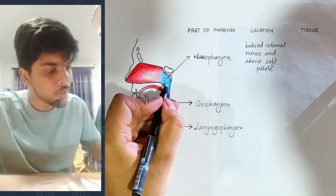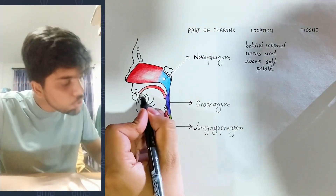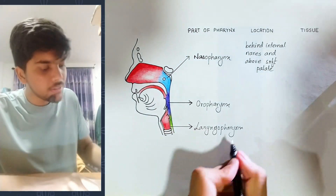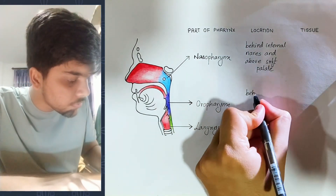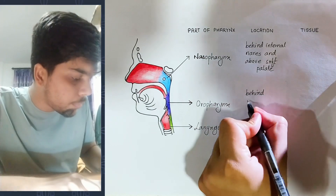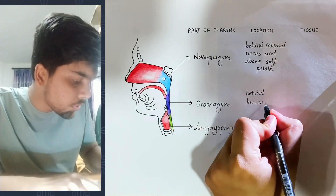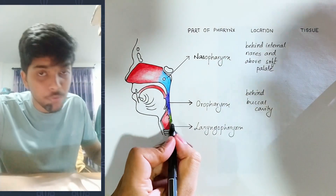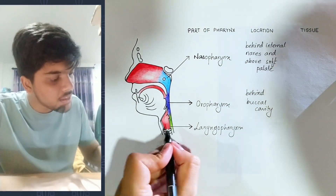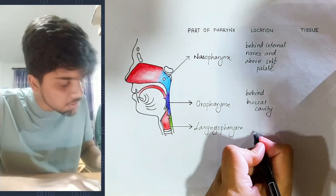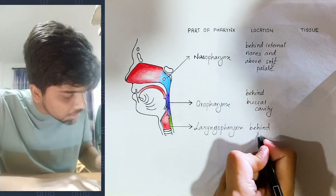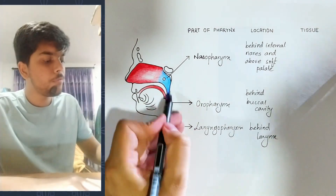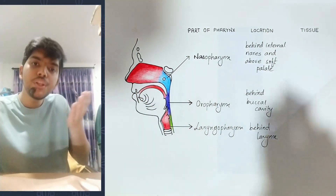Next is the oropharynx. This is the buccal cavity. Behind the buccal cavity is the oropharynx. Next is the laryngopharynx. This is the larynx. Behind the larynx is the laryngopharynx.